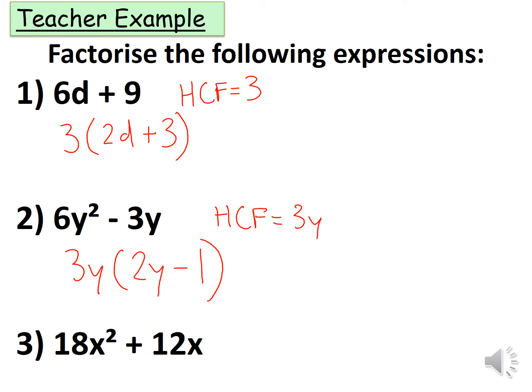Now let's have a look at question 3. What is the highest common factor of 18x² and 12x? The highest common factor of these two is going to be 6x.